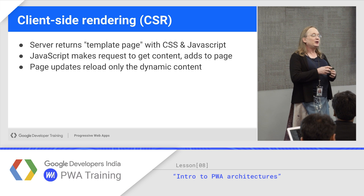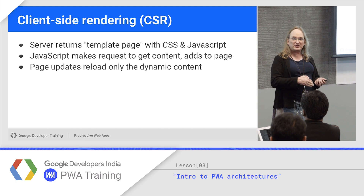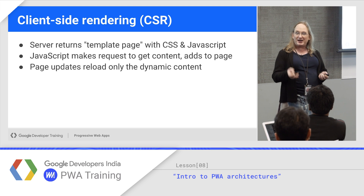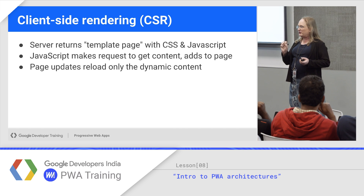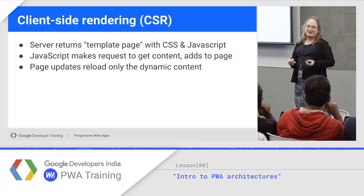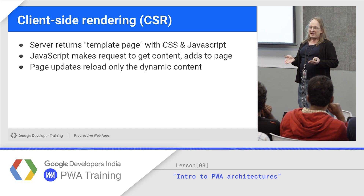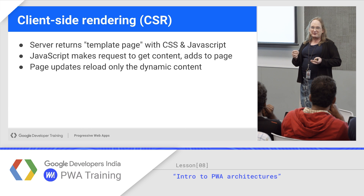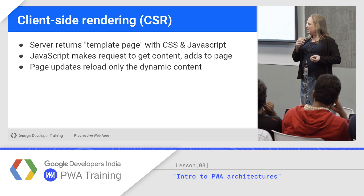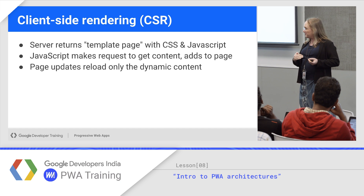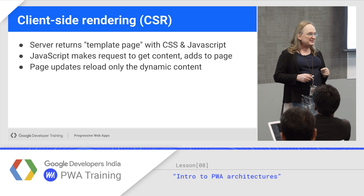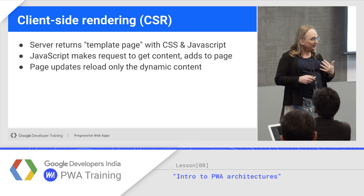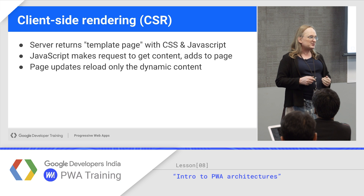A classic example was Twitter. Twitter was one of the first to go from server-side rendered to a front-end-only HTML5 single-page app, and then about a year later they reversed course. When you build a single-page app, you load the page, load the CSS, load all the JavaScript — and only after you have all the JavaScript can you make network requests and start building the page. That slows you down. With a server-side rendered page, you could put some content on the screen right away — maybe it's not interactive, but it's visible — and then load your scripts in the background.